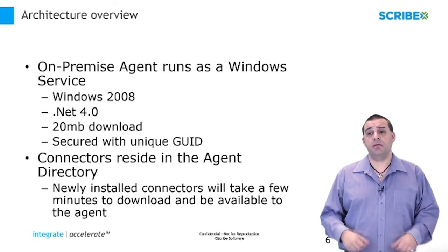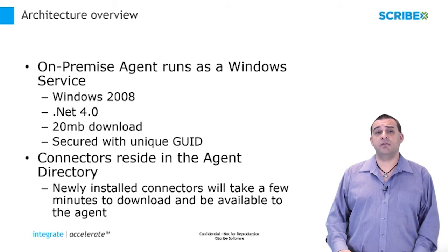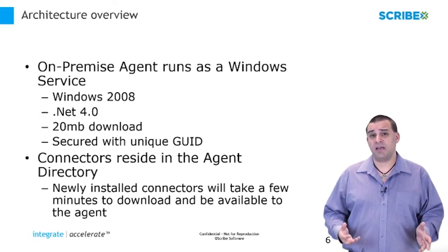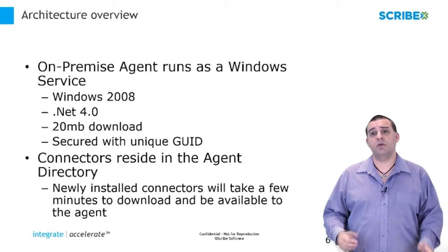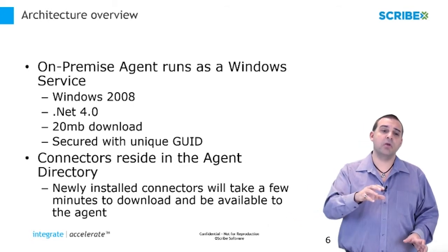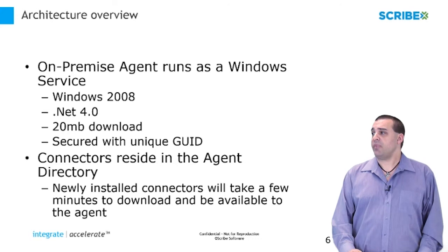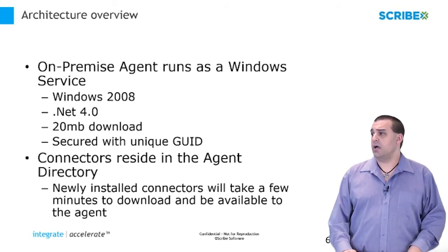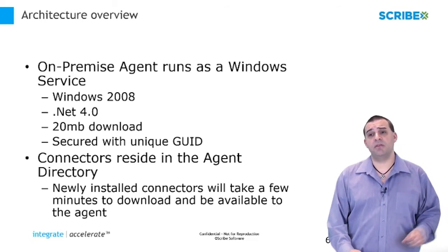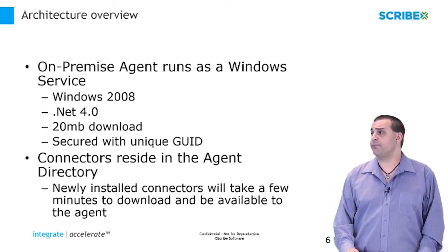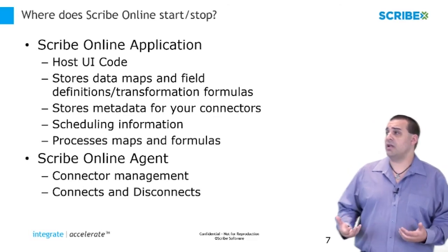The on-premise agent that you host behind your firewall is a Windows service. It requires Windows 2008 or newer and .NET 4.0. It is about a 20 megabyte download, so it has a very small footprint. It is secured with a unique identifier that ensures that particular agent can only talk to a particular organization within the Scribe Online platform, so that someone else with an agent cannot spoof your Scribe Online organization. As you install the on-premise agent, a series of connectors show up in the connector directory, and you can download new connectors from the marketplace.